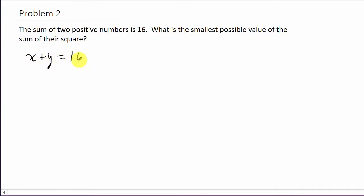So I've got the sum of two positive numbers is 16, and so that's x plus y equals 16. And we want to find the smallest possible value of the sum of their squares. So I want to minimize the sum of their squares. So we'll just call it s for sum or sum of squares. Well, that's equal to what? The two numbers are x and y, so the sum of their squares, that would be x squared plus y squared.